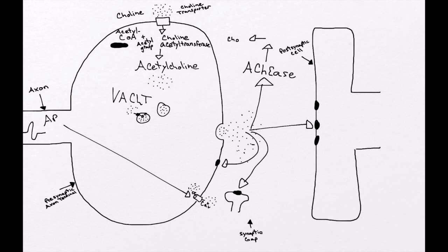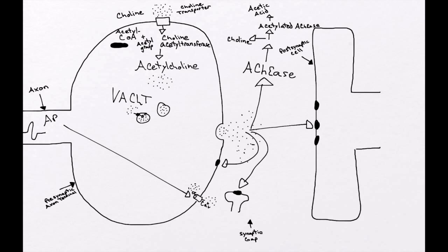Once acetylcholinesterase binds to acetylcholine, it breaks it down in a couple of steps. First it breaks it down into a choline molecule and acetylated acetylcholinesterase. That is further broken down into acetic acid — basically an inert substance that doesn't do much — and fully functional acetylcholinesterase, which is then able to bind to acetylcholine again. The choline molecule that is released can be recycled back into the cell.